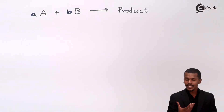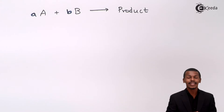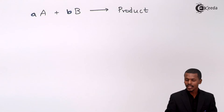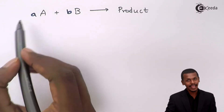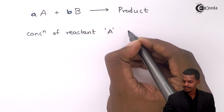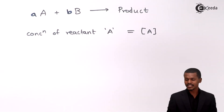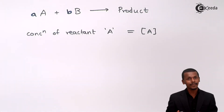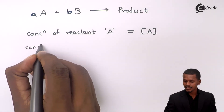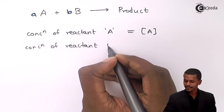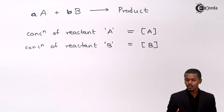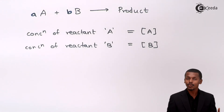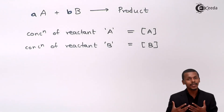So therefore, according to the Law of Mass Action, the rate of the reaction is dependent on the concentration of the reactants. We can represent the concentration of reactant A as [A], and similarly the concentration of reactant B as [B]. The rate of the reaction is directly proportional to the concentration of the reactants — meaning if the concentration of the reactant is more, then the rate of the reaction will also be more.